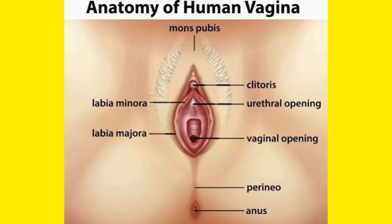You also have two lip-like structures: these are the labia majora and labia minora. The labia majora is the outer lips, which is the larger one, and the smaller inner one is the labia minora.